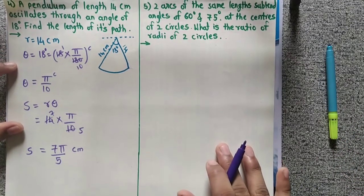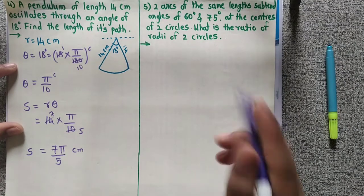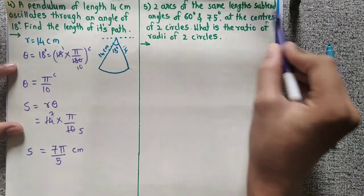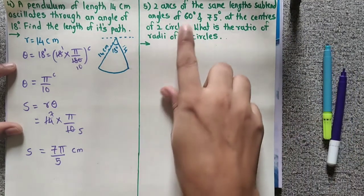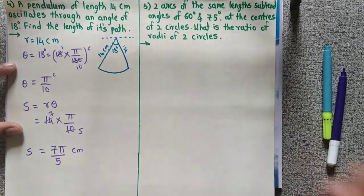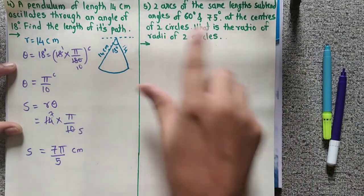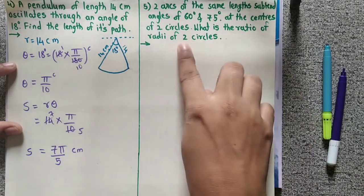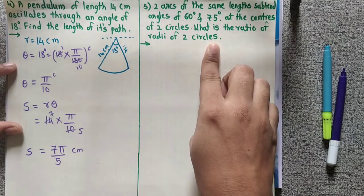Now next question, question number 5: Two arcs of the same length subtend angles of 60 degrees and 75 degrees at the centers of two circles. What is the ratio of the radii of the two circles?